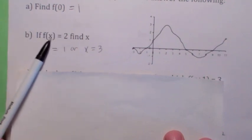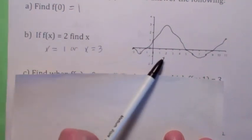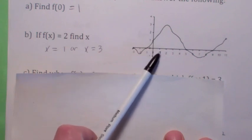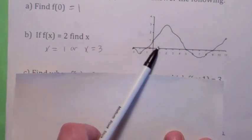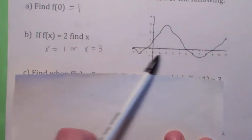Now, here we go. If y equals 2, if f of x equals 2, find x. It looks like there might be two answers. y is 2 when x is about 1. And y is 2 also when x is about 3, approximately.